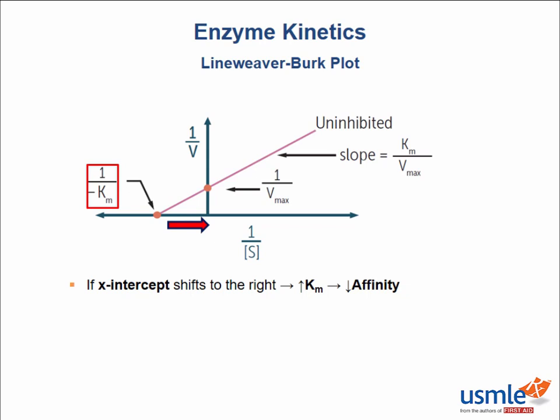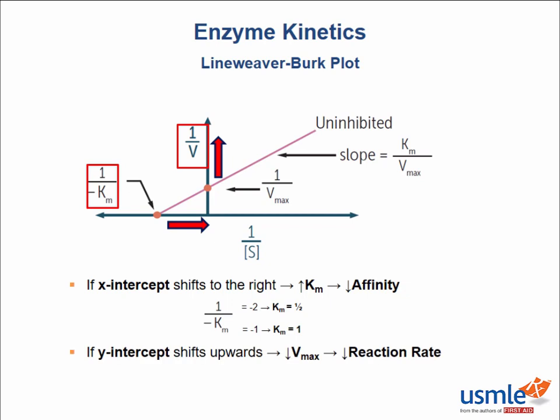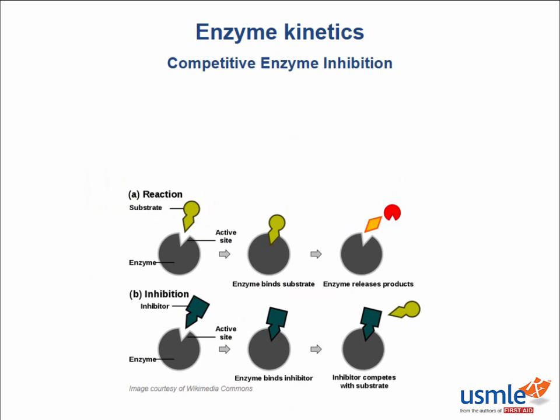Inputting numbers makes this easier to understand. When negative 1 over Km becomes less negative — from negative 2 to negative 1 — Km increases from one-half to one. Moving to the y-axis: if we shift the y-intercept up and farther from zero, we increase that value but Vmax decreases. When 1 over Vmax increases from 1 to 2, Vmax decreases from 1 to one-half. Now that we know how to interpret these two graphs, let's see how Step 1 will use them to test you.